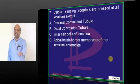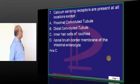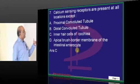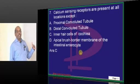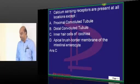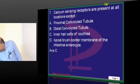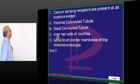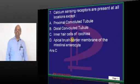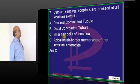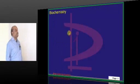Calcium sensing receptors are found in both the proximal and distal convoluted tubule, and the brush border of the intestinal enterocyte. Inner hair cells of the cartilage do not have calcium sensing receptors — that is what you need to basically remember.